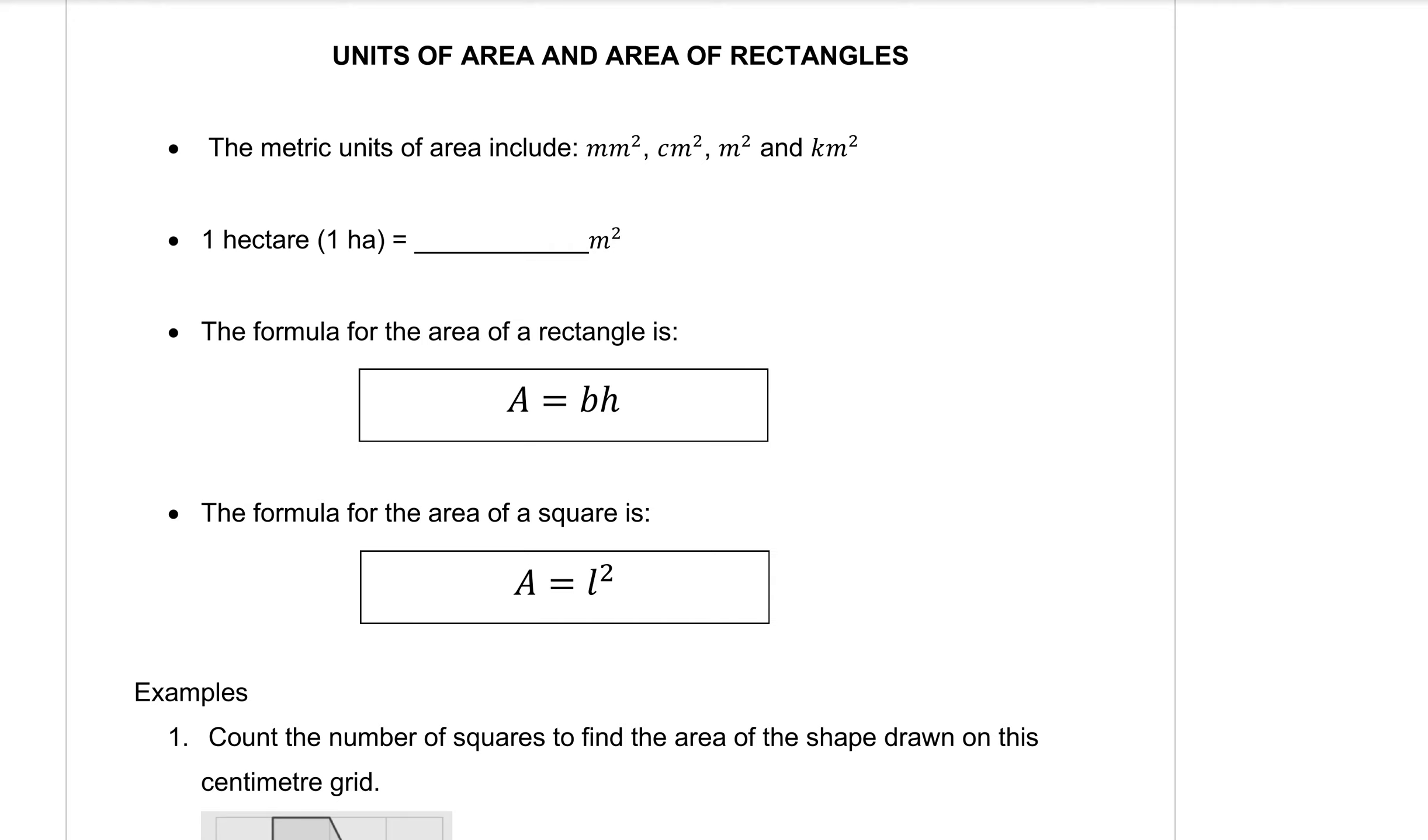So we talked about the metric units before but when we're talking about area the metric units of area are millimeters squared, centimeters squared, meters squared and kilometers squared. So all of our units become square because that's what area is. We're counting out little bits of little squares inside our shapes.